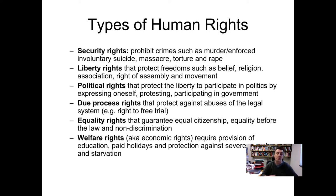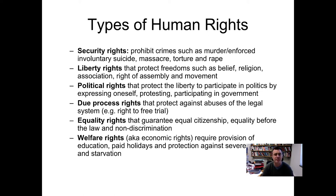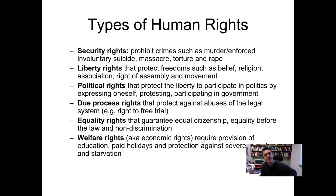Political rights include the right to vote and to run for public office — you must not be disqualified on any grounds. Due process rights protect against abuses of the legal system, including the right to a fair trial. Equality rights guarantee equal citizenship, equality before the law, and non-discrimination. And welfare rights, also known as economic rights, require provision of education, paid holidays, and protection against severe poverty and starvation. These are the six categories and types of human rights we have today.